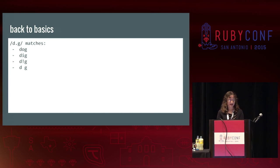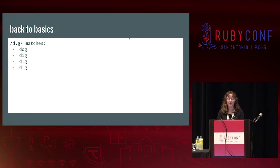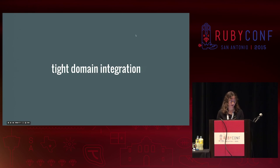In the wild, most production regex are a lot closer to the basic D-period-G example. It's a perfectly valid regex expression, and it exemplifies one of regex's genuine intuitive strengths. It's not that far a leap to figure out that a regex containing the letter D will match on the letter D. More generally expressed, we can call this feature of regular expressions tight domain integration.